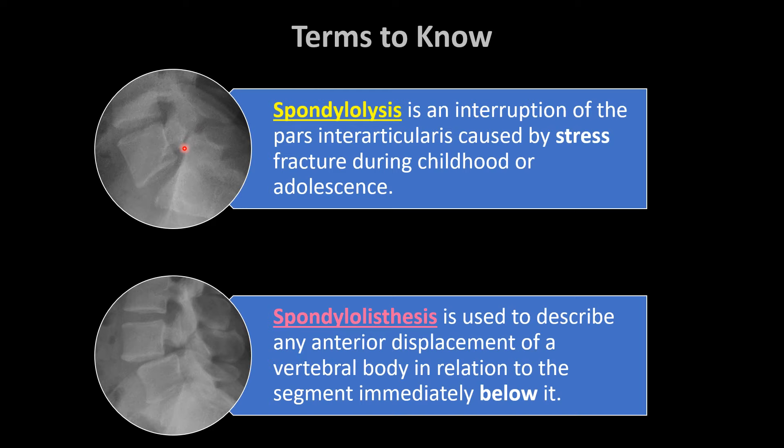Spondylolisthesis is a term used to describe any anterior translation or displacement of a vertebral body in relation to the segment immediately below it. In this case we have a spondylolysis with anterolisthesis. Here you can see L4 in relation to L5, so this is a spondylolisthesis of L4 because it has moved anterior in relation to L5.